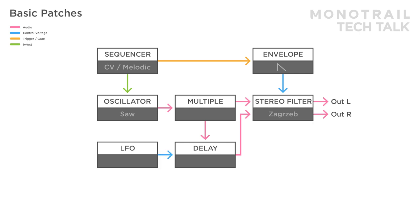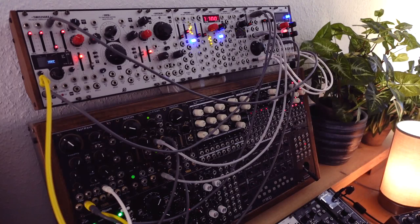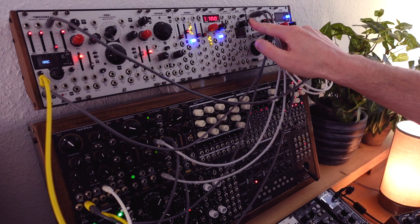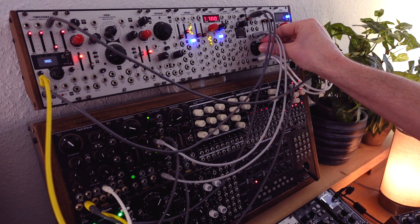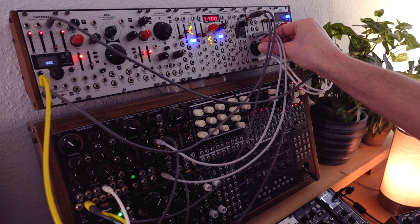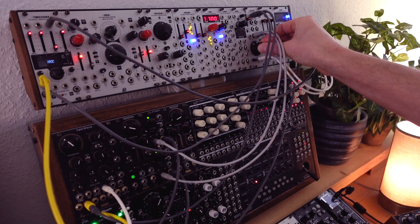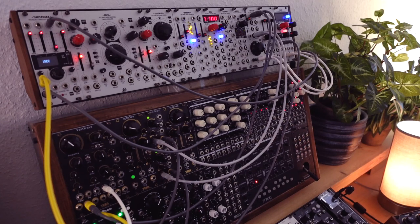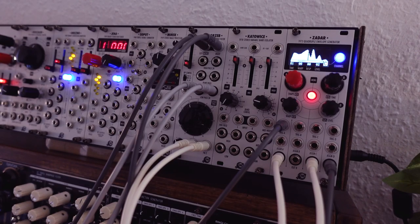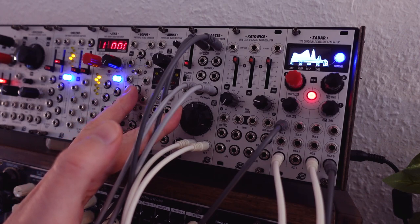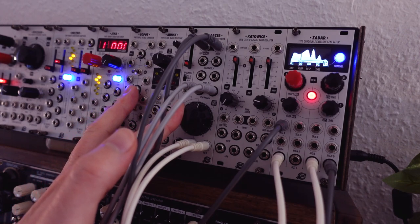You can add more modulation to this to add depth. Here, a slow LFO is modulating the time parameter on the delay, and a complex LFO shape is modulating the filter cutoff. You can use any effect you like or have — for example, a digital or spring reverb, frequency shifter, simple mono filter with some resonance, and so on. The key is to modulate one side of the audio just enough to create a slightly different sound than the clean oscillator.